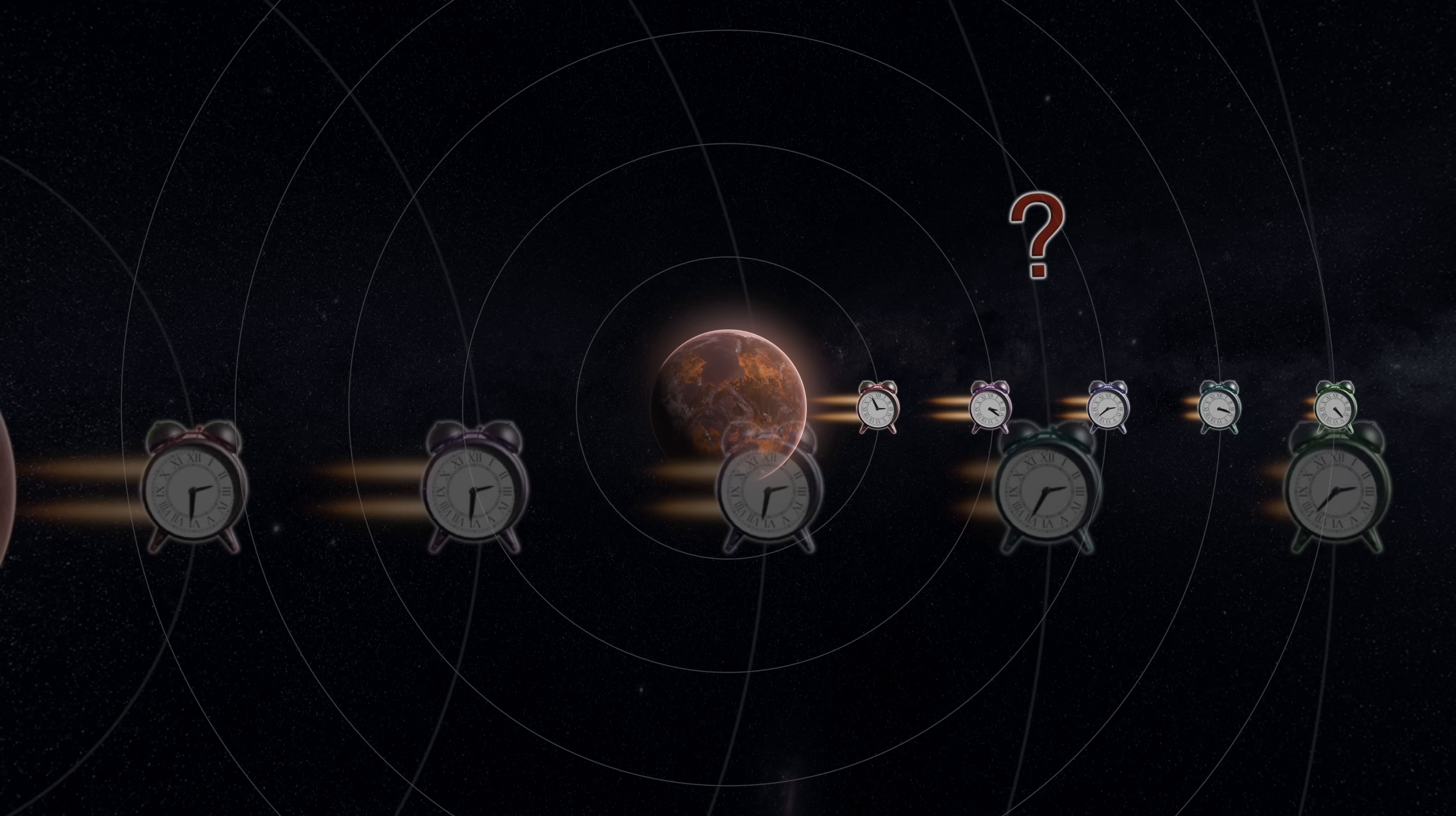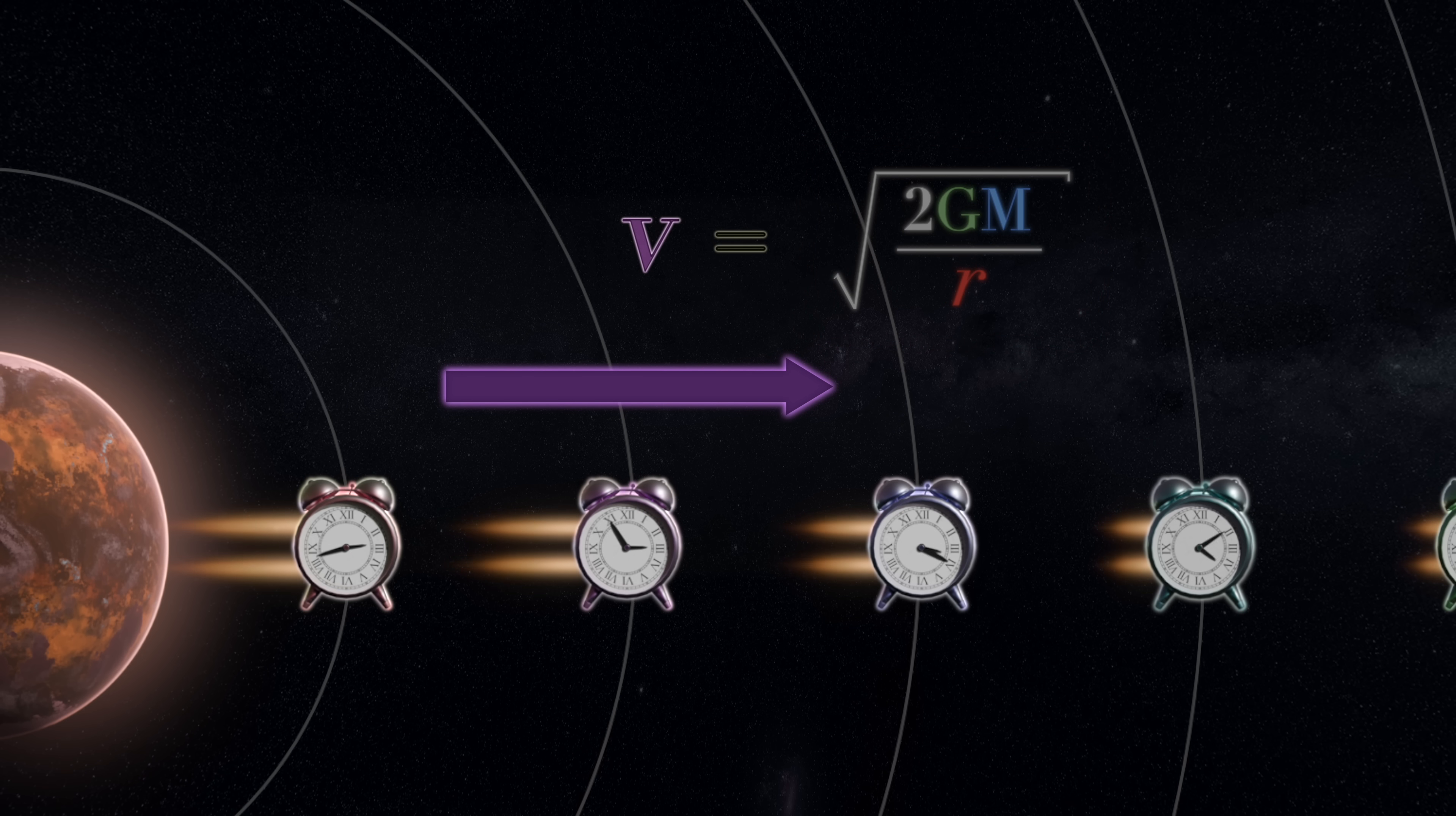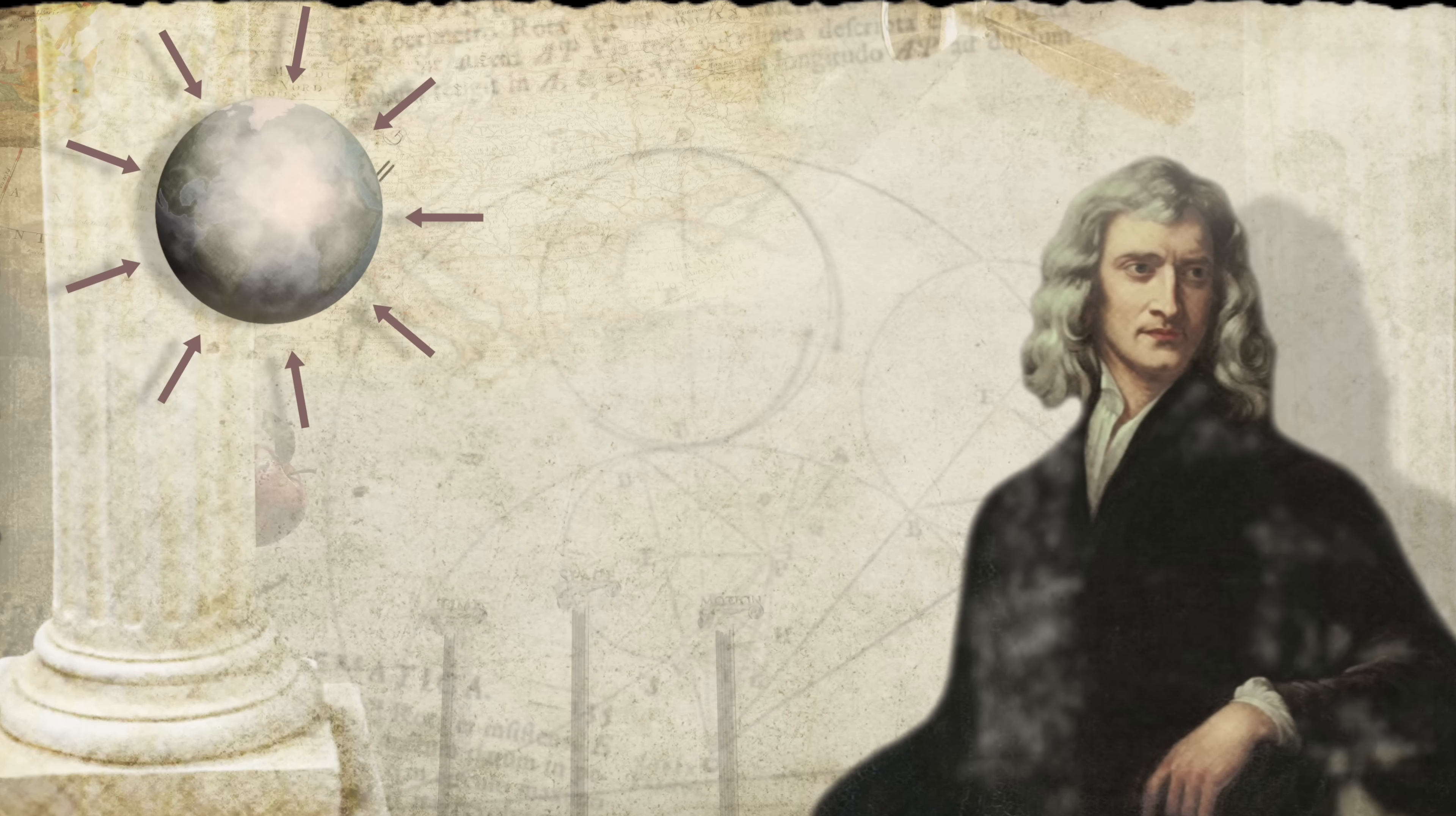Indeed, here is where we make note of another extremely intriguing coincidence. The expression the square root of 2GM over r, our hypothetical guess for the velocity of these accelerating clocks, isn't just some random assemblage of values. It's actually already a well-known velocity expression that, incredibly enough, comes from classical Newtonian physics.